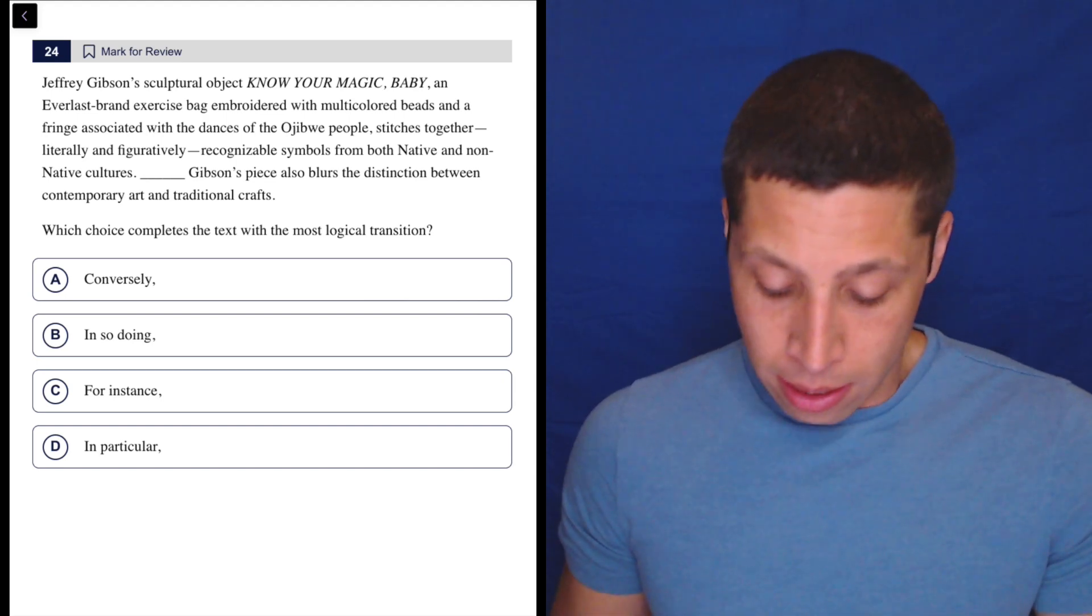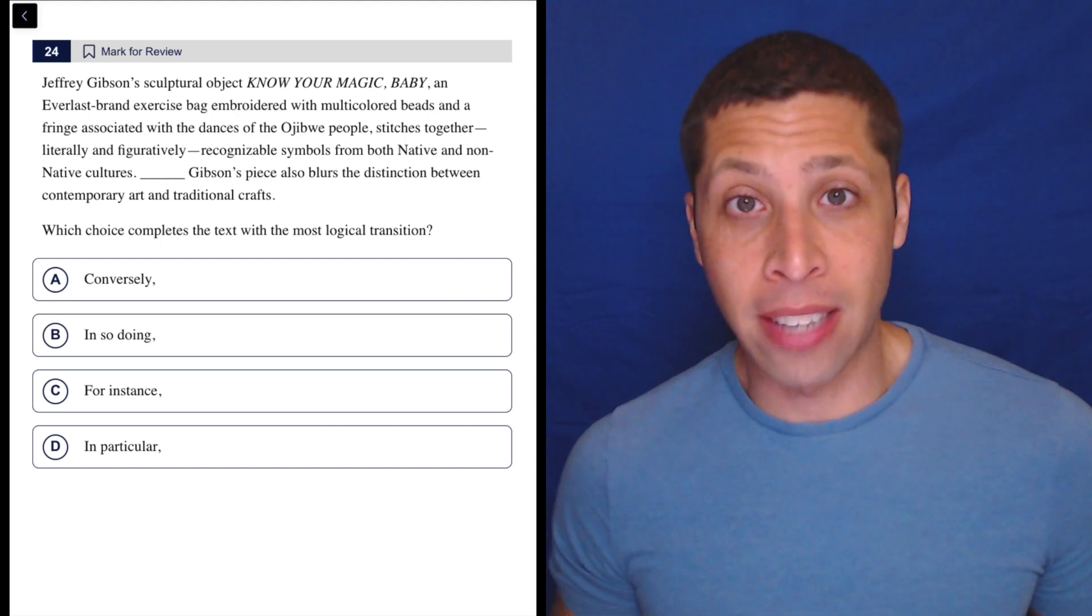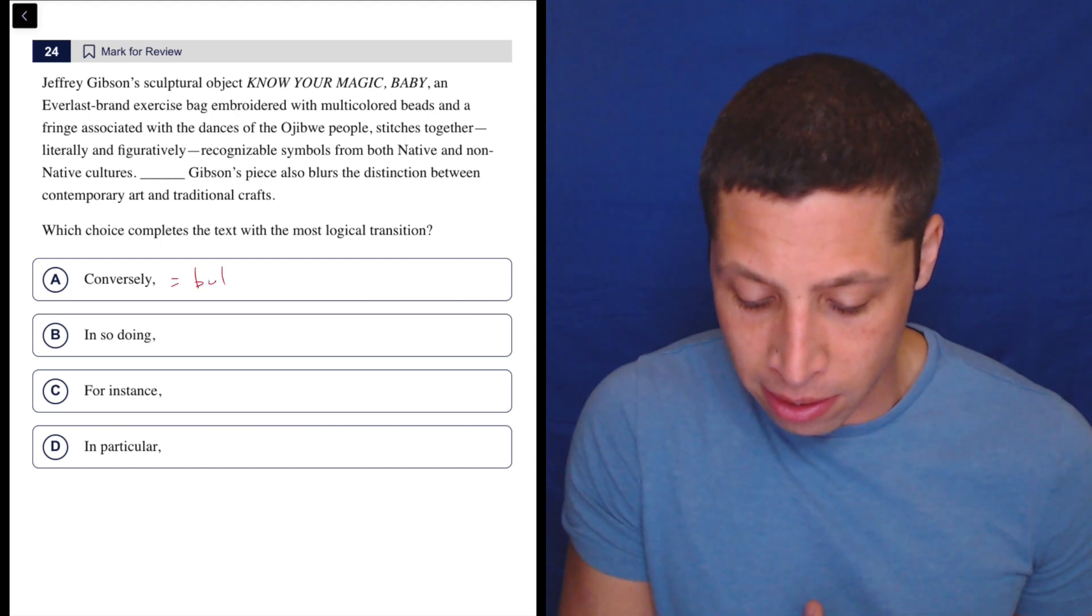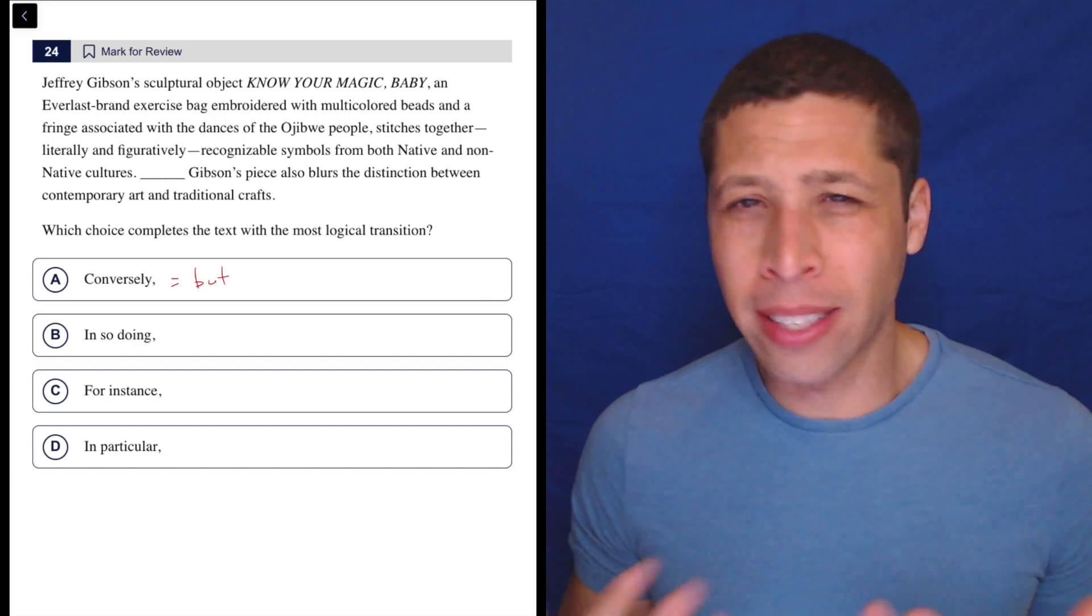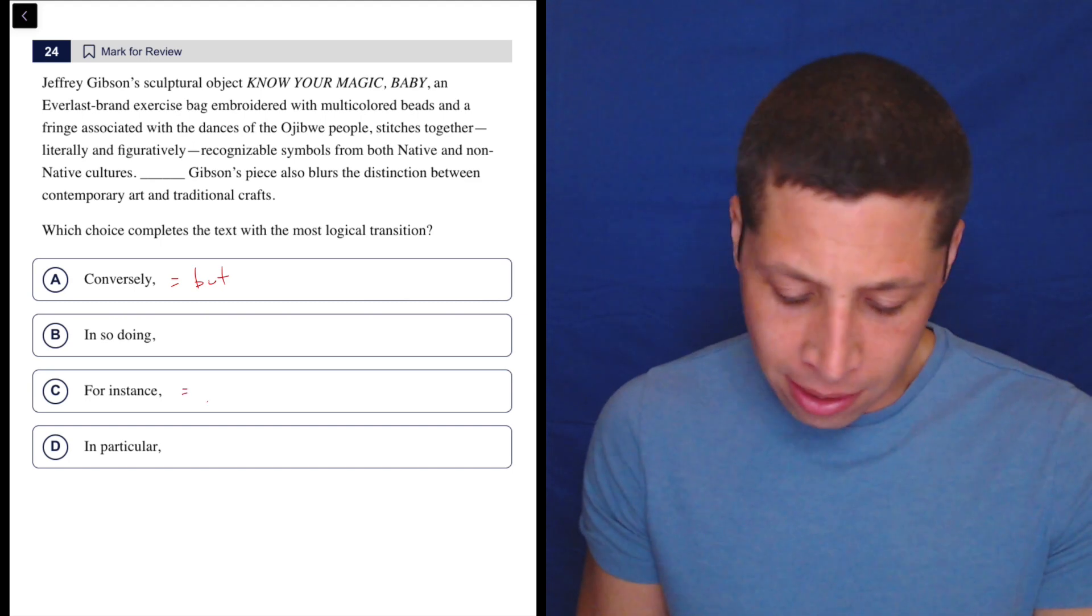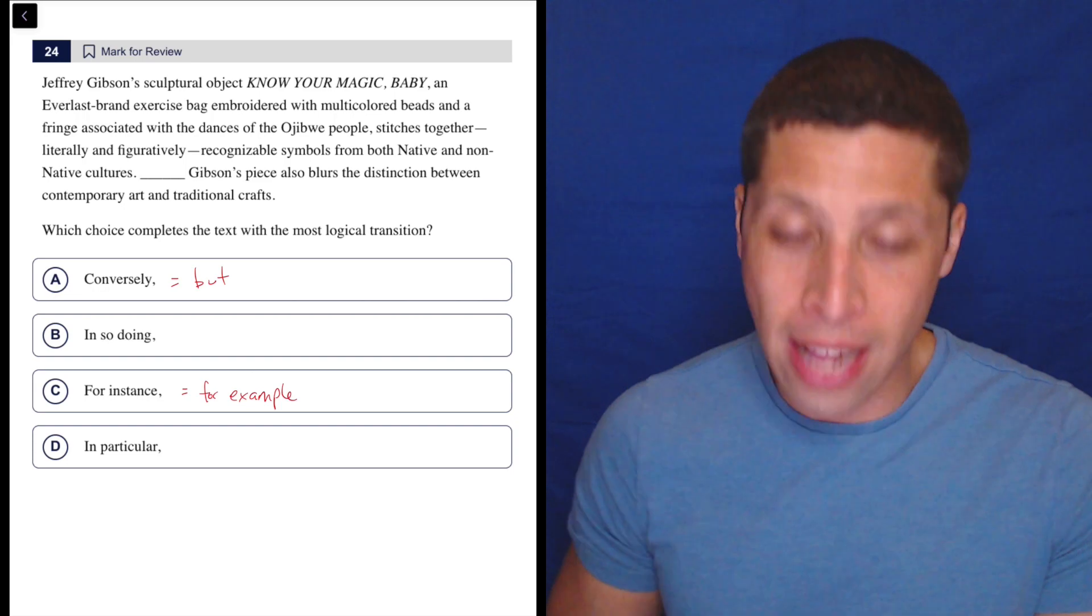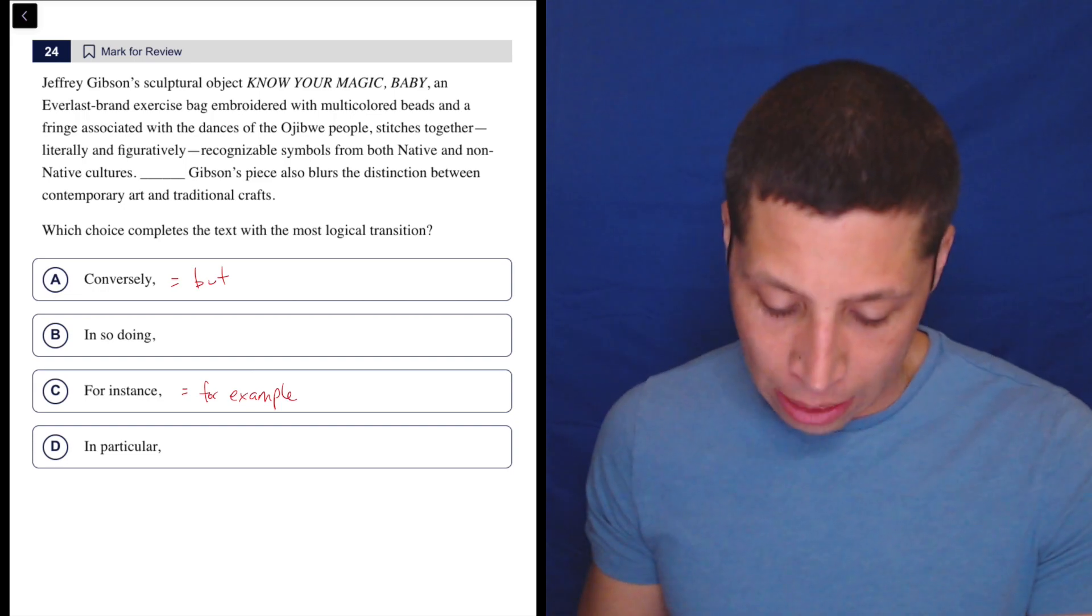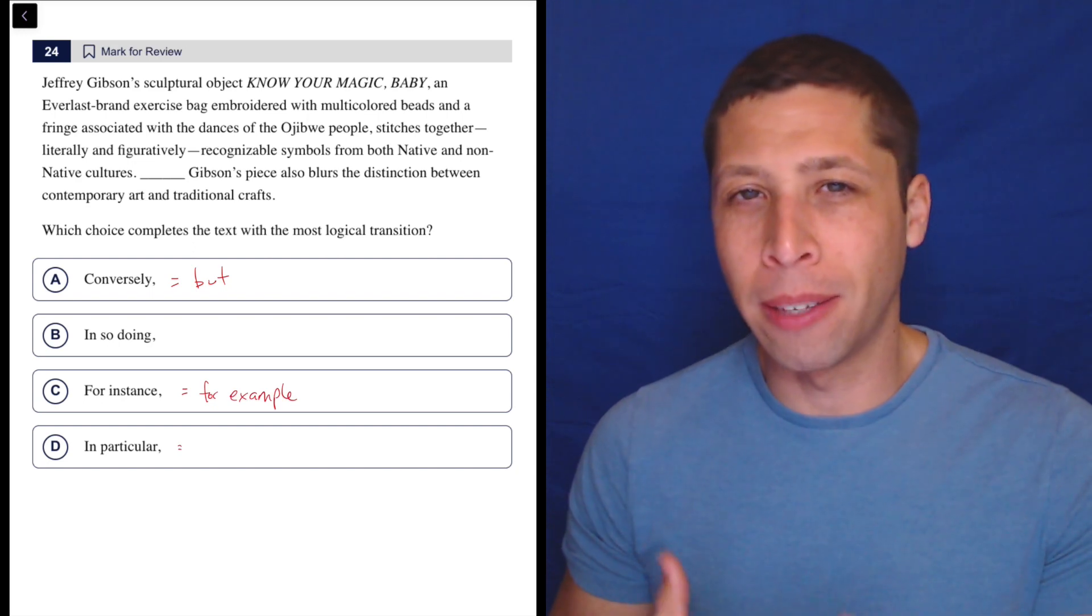Okay, so we can look at the answer choices if we want here to gain a little bit of a place to stand on, right? So conversely is a fancy version of the word but. In so doing is kind of a weird one that doesn't really fit into one of my categories nicely. For instance is, you know, for example. We probably don't even need to write that to understand that. So is this an example? We'll ask that question.